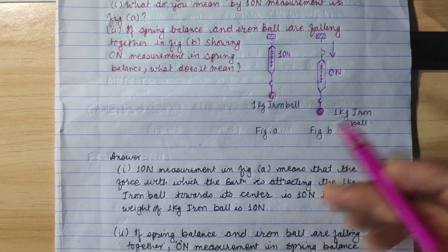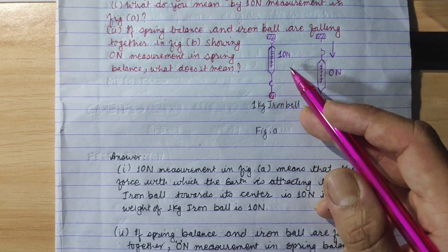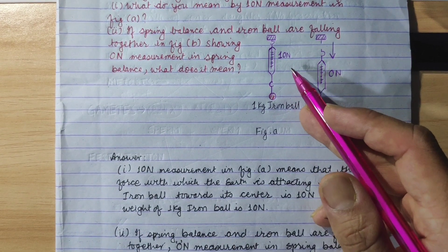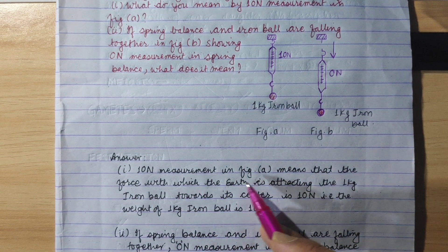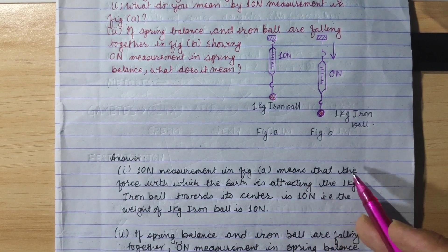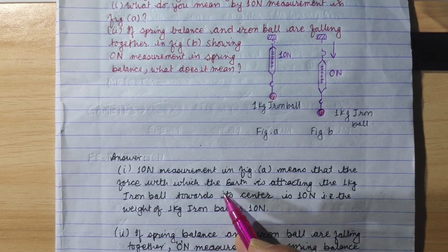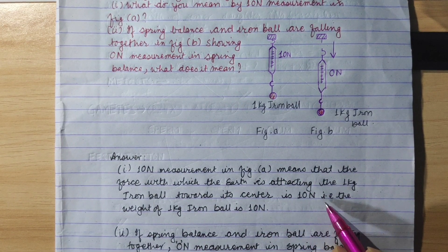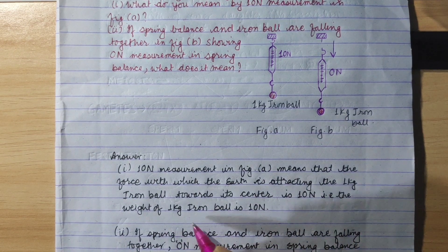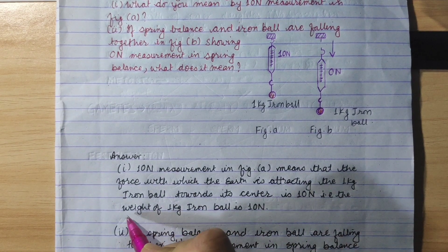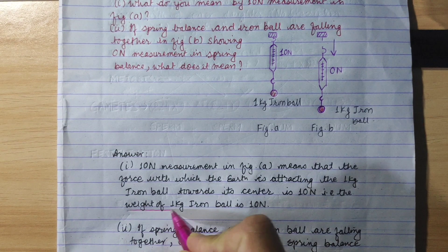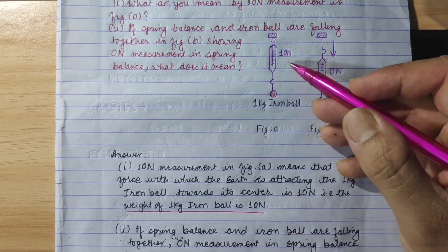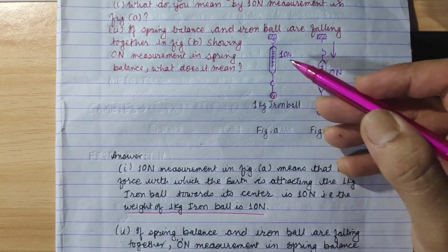Answer: 10 Newton measurement in figure A means that the force with which the earth is attracting the 1 kg iron ball towards its center is 10 Newton. That is, the weight of 1 kg iron ball is 10 Newton.